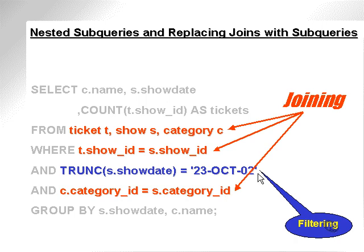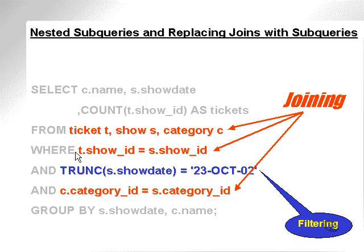There's one thing we can actually do to speed this query up. First of all, the filtering should be applied first, on the first line of the WHERE clause. What we need to do is filter out the shows we don't want — we find all the shows that are on a specific date, and we apply that first.